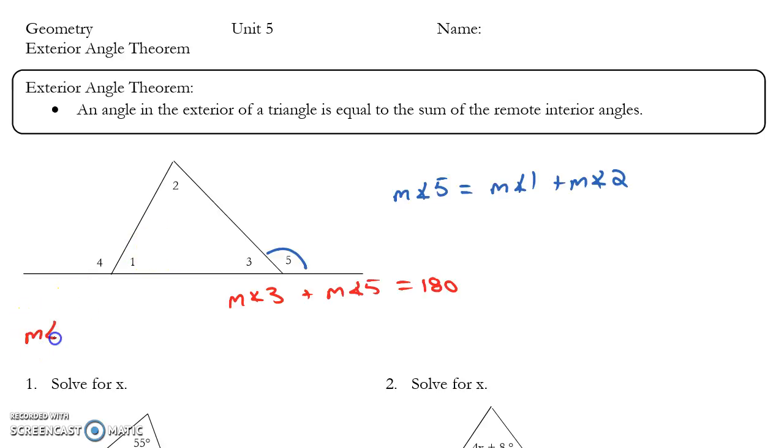So measure of angle 1 plus the measure of angle 2 plus the measure of angle 3 equals 180. Well, let me do a quick bit of algebra. If I subtract angle 1 and angle 2 from both sides, that's going to leave me with the measure of angle 3 equals 180 minus the measure of angle 1 minus the measure of angle 2.